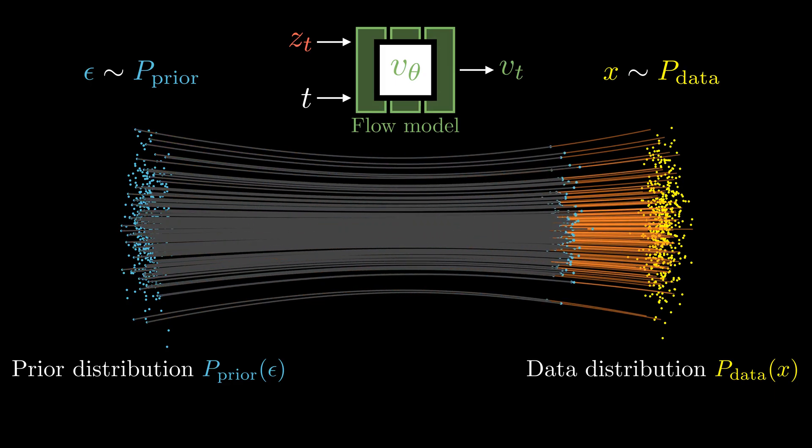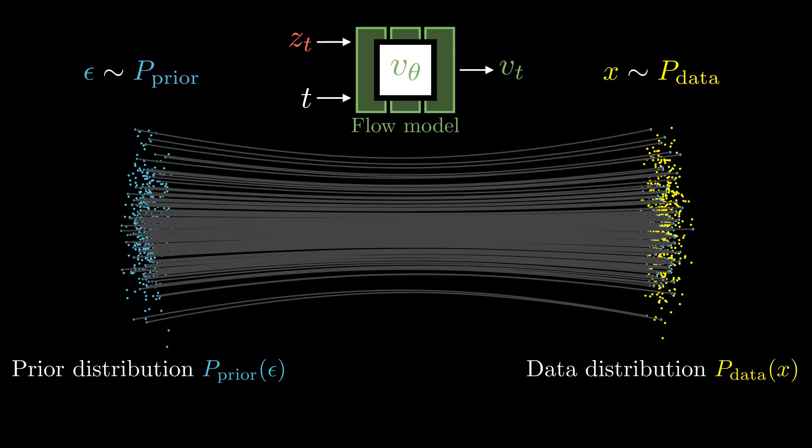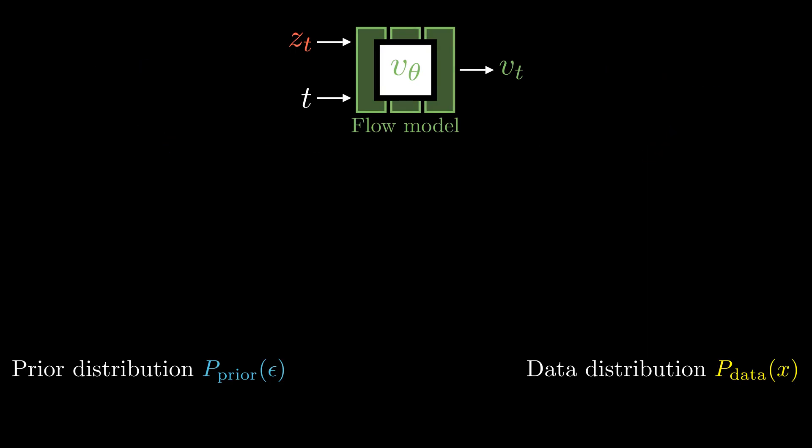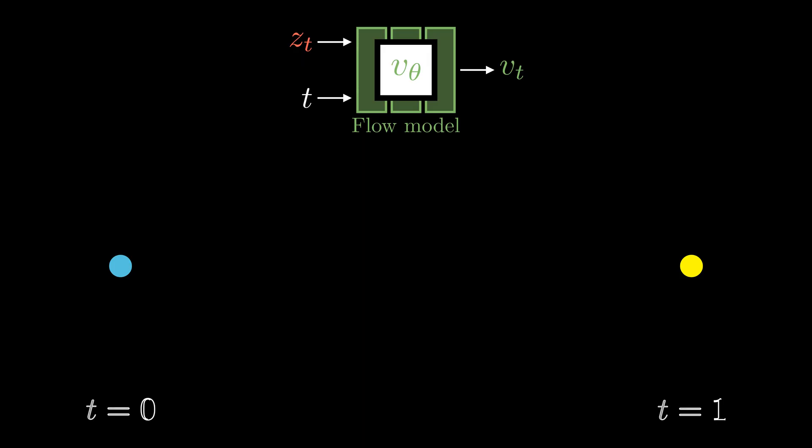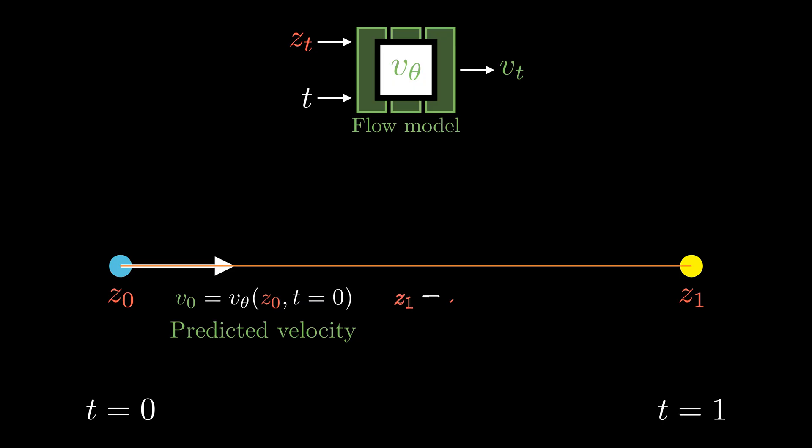Now how do we transform a noise sample z0 to a data sample z1 using the trained flow model? At time equals to zero, we predict the velocity vector v0. Assuming that the path to the data is just a straight line, then we just need to evaluate our flow model once and follow the predicted velocity to get to the data point z1.